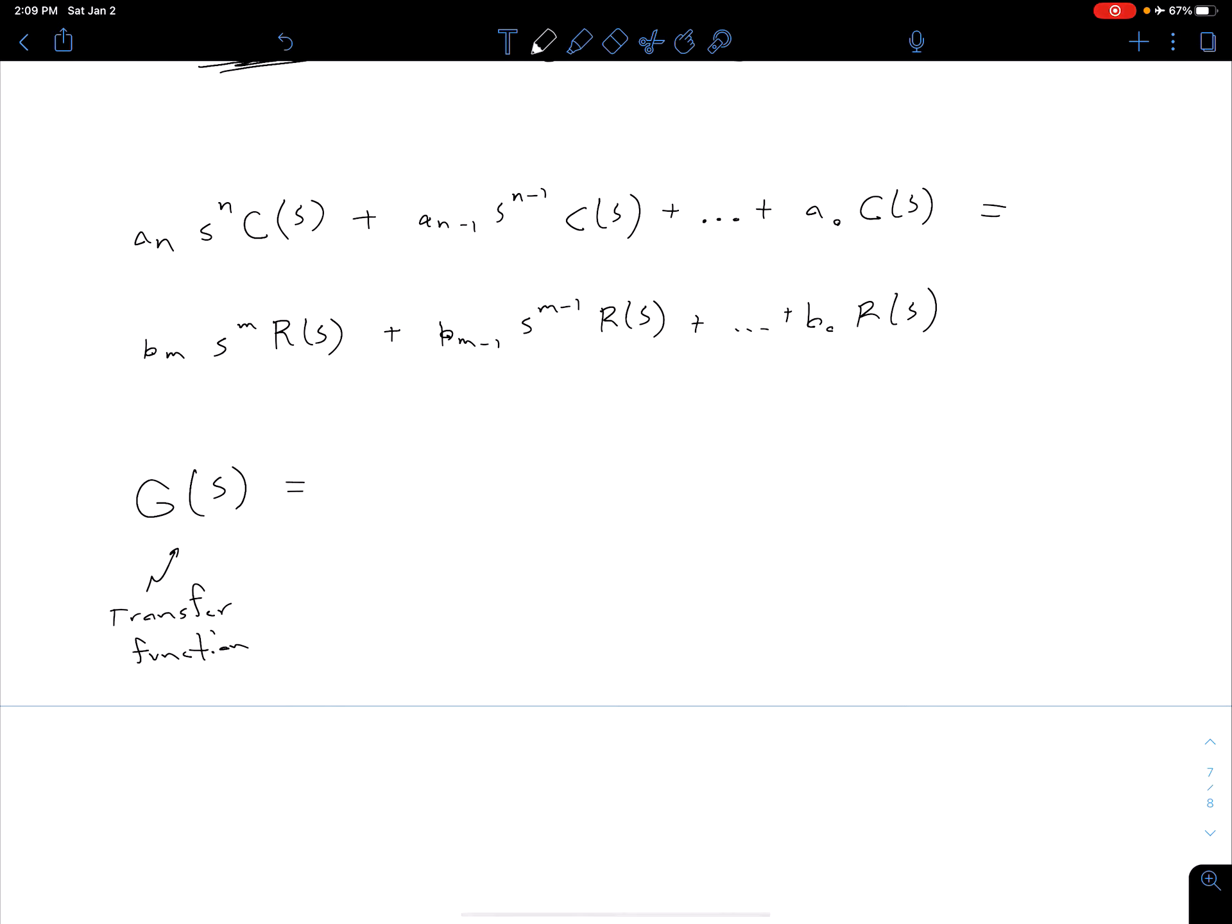And so our transfer function by definition is going to be equal to the output divided by the input. So we have our controlled variable output C(s) divided by our reference input R(s).